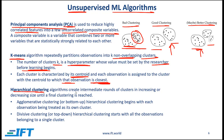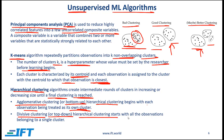Hierarchical clustering algorithms create intermediate rounds of clusters in increasing or decreasing size until a final clustering is reached. We can have agglomerative clustering, which is bottom-up clustering, where hierarchical clustering begins with each observation being made as its own cluster. The other approach is divisive clustering, or top-down clustering, where hierarchical clustering starts with all observations belonging to a single cluster and then divides into smaller and smaller clusters.